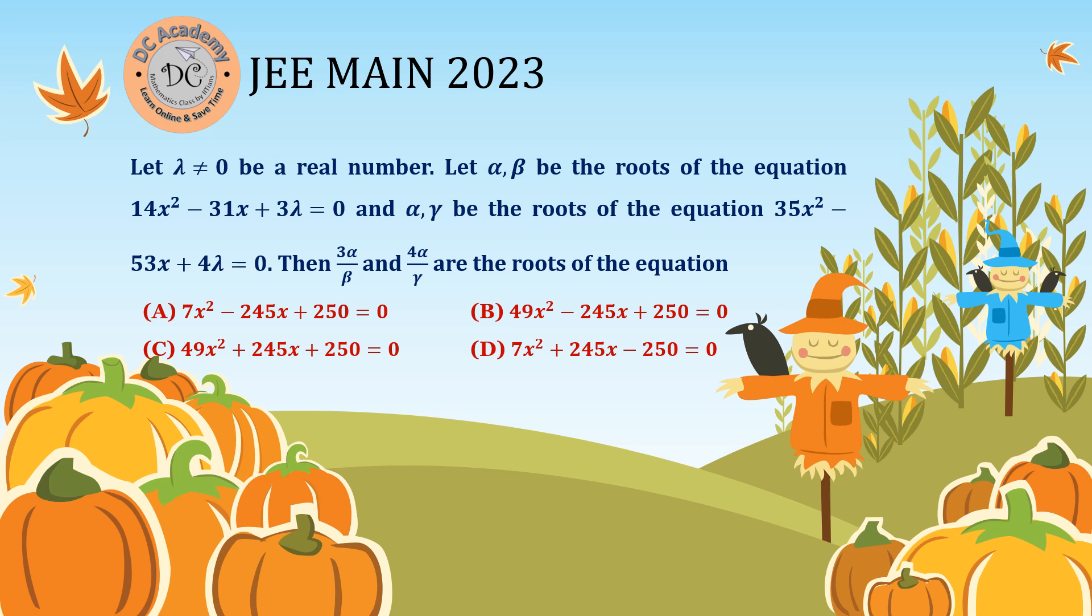This problem appeared in JEE Main 2023. We have a value λ and two quadratic equations. α, β are the roots of the first quadratic equation, and α, γ are the roots of the second one. Therefore, α is the common root.